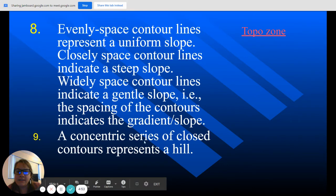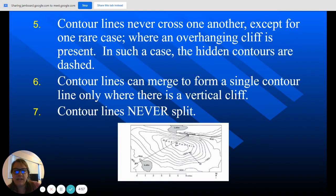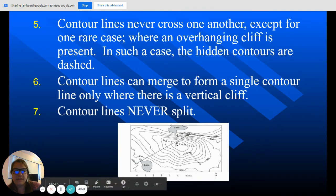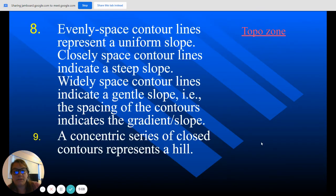And number nine, a concentric series of closed contours represents a hill. You can see that all of these contour lines, they go around and they connect and it's making a circle. When you have lots and lots of different circles building up on top of each other, that's going to be a hill or a mountain.